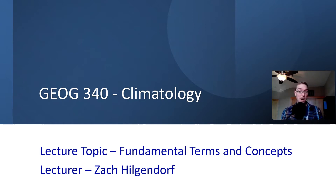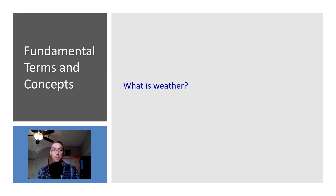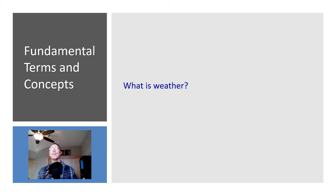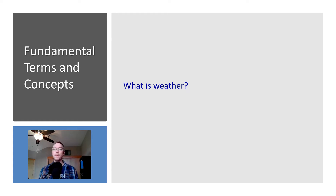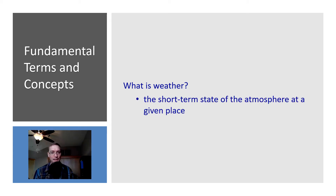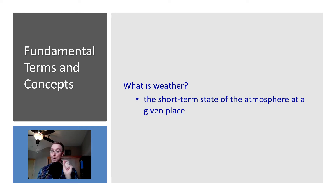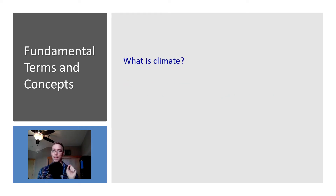The first of those might seem like the simplest: what is weather? I look outside right now and I'm seeing clouds rolling by, it's a partly sunny day, there's some wind. Those types of observations are exactly what weather is. It is the short-term state of the atmosphere at a given place, as opposed to climate.